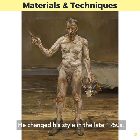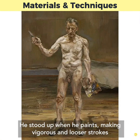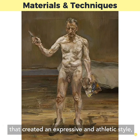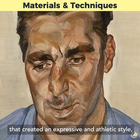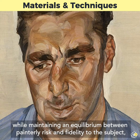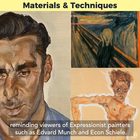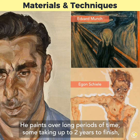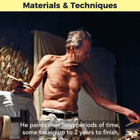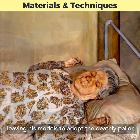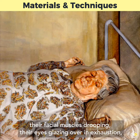He changed his style in the late 1950s. He stood up when he painted, making vigorous and looser strokes that created an expressive and athletic style, while maintaining an equilibrium between painterly risk and fidelity to the subject, reminding viewers of expressionist painters. He paints over long periods of time, some taking up to two years to finish, leaving his models to adopt a deathly pallor — their facial expressions drooping, their eyes glazing over in exhaustion, opposite their excited Freud.